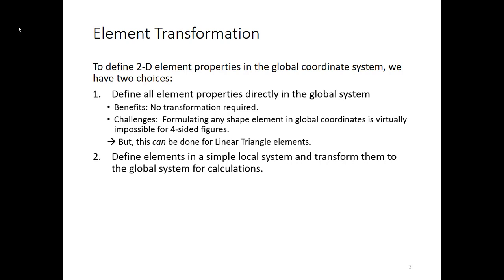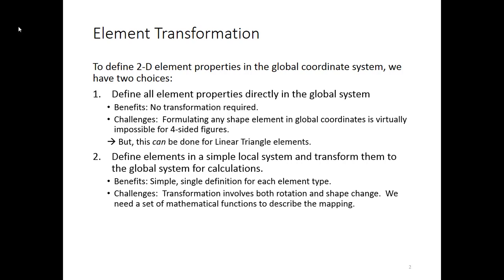The alternative is to define the elements in some sort of local system and then transform them to the global system to do the calculations. That is by far easier, even though the transformation gets a little bit messy. It's far easier because we then have one definition for every four-sided figure — a simple, single definition — but we have a transformation challenge.